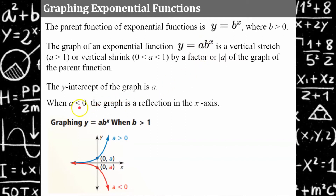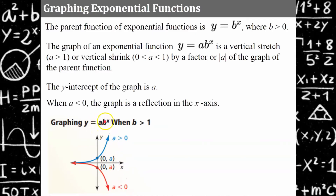When a is less than zero — so when a is negative — then it's a reflection in the x-axis. You can see how this blue exponential function has a greater than 0. If a is less than 0, whatever is being multiplied to b to the x — if it's negative — is reflected in the x-axis.